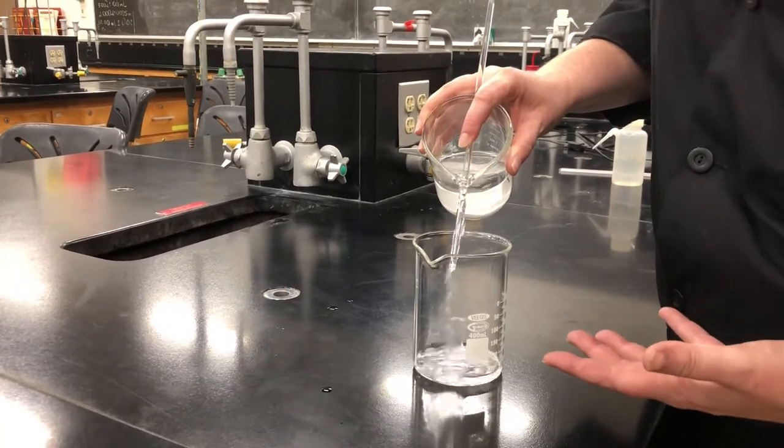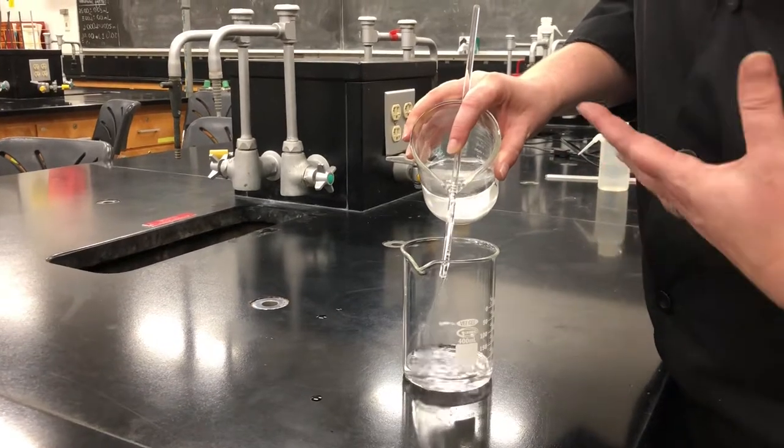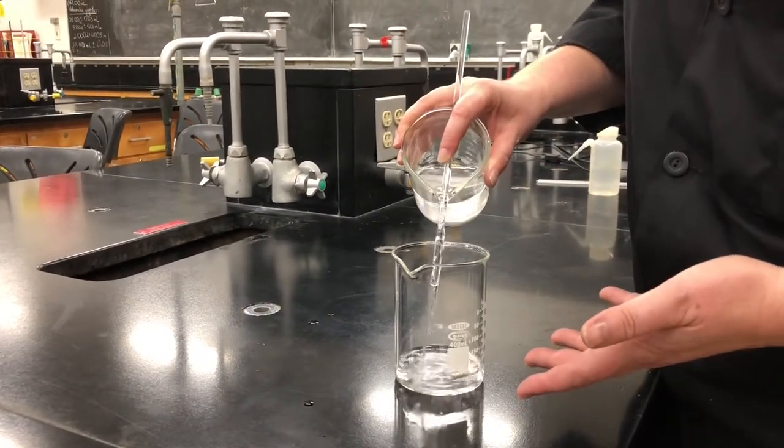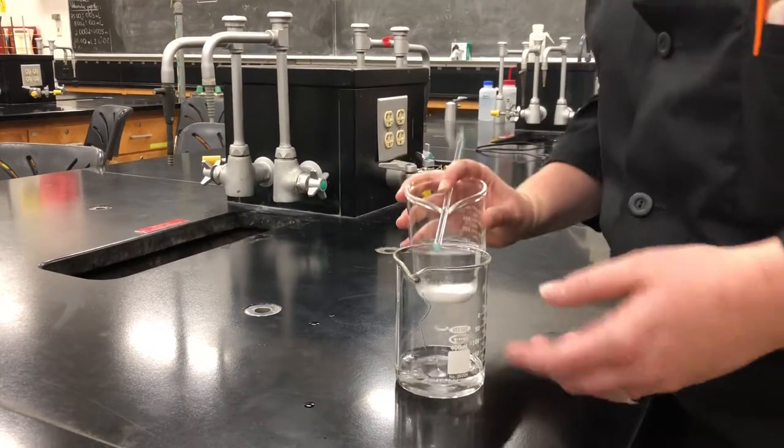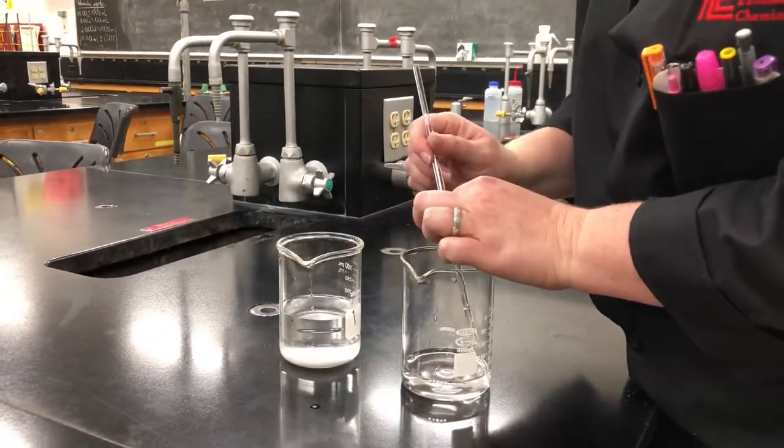Now as we do this, some of the solid is going to start to get stirred up. If it gets a little bit too cloudy in that original beaker, then we'll let it sit back down onto the counter and let that solid settle.